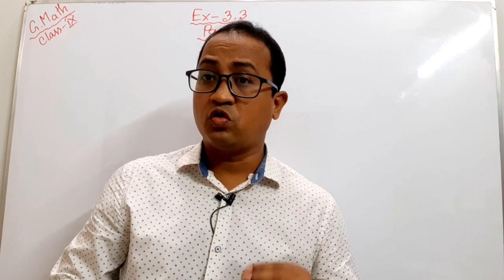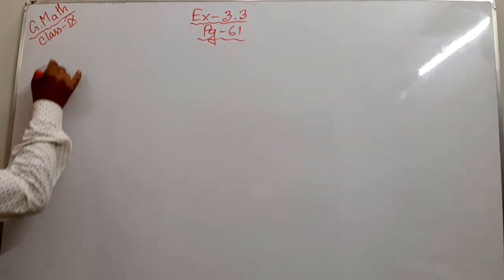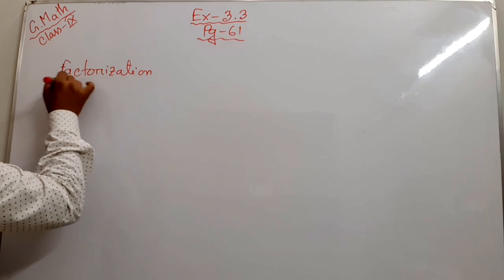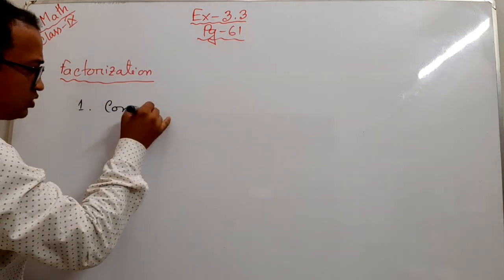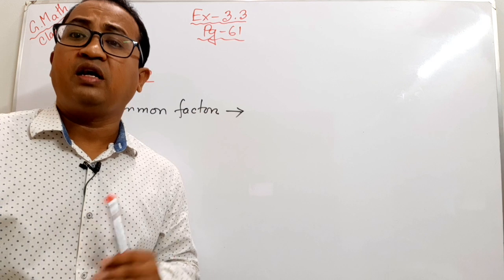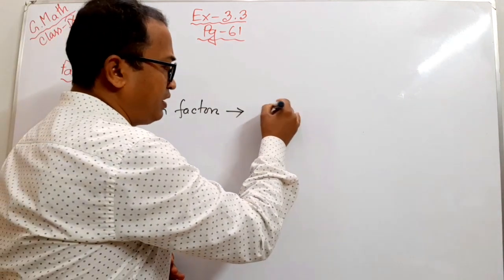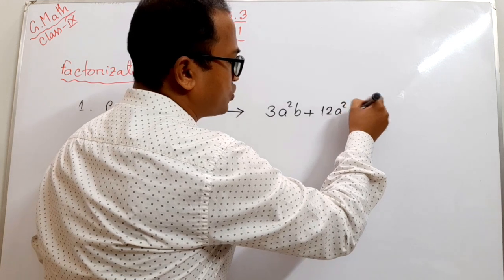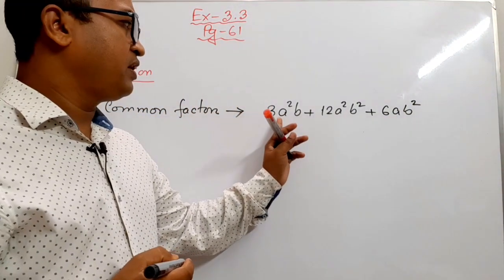First, you should know some rules of factorization. Look at the board. In factorization, the first rule is to find the common factor. In the given expression, if any number is common in all the terms, we will take it out as the common factor. For example, consider 3a²b + 12a²b² + 6ab².